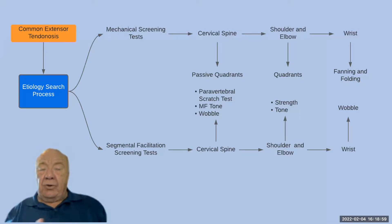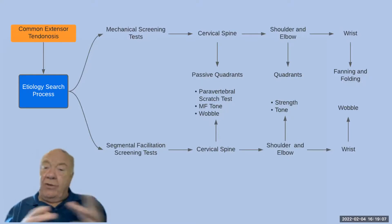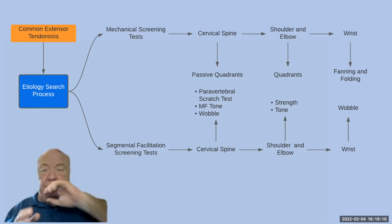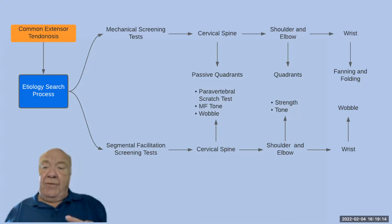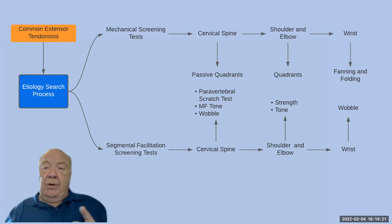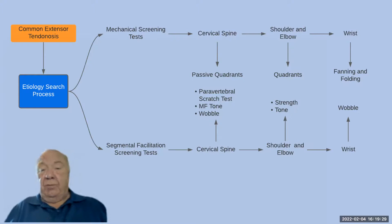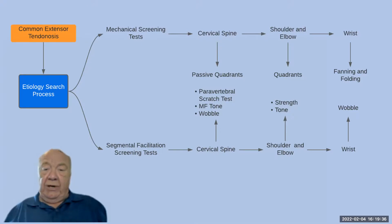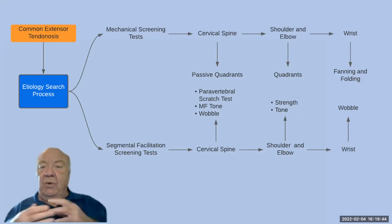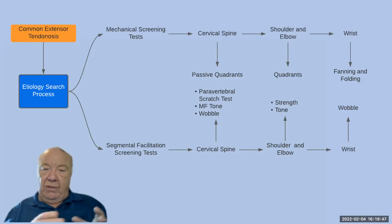We can look for mechanical issues likely to cause some of these problems. In the cervical spine, we can look at passive quadrant tests — these are quick screening tests which need to be sensitive but not necessarily specific. For the cervical spine to affect the elbow, this is either going to be a hidden radiculopathy or segmental facilitation. We move them into these positions and see if we can reproduce pain in the neck, not in the arm. If that's positive, we can start looking at the neck in more detail by palpating for muscle tone and we can look through the whole quadrant for weaknesses.